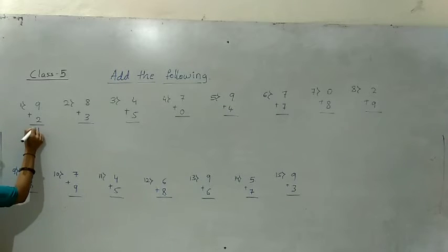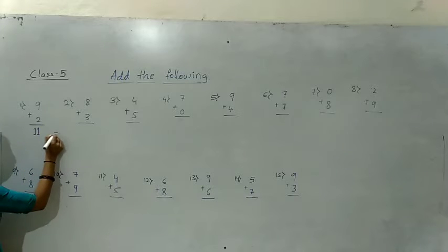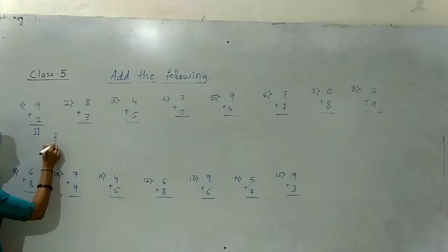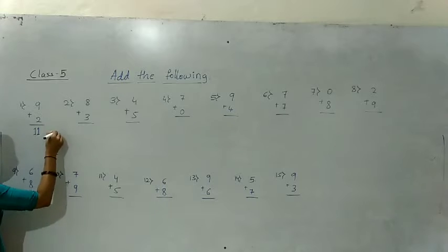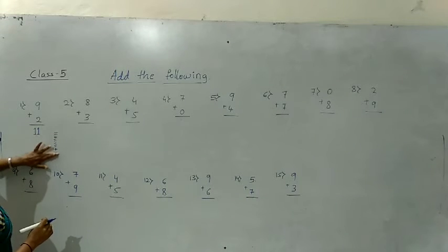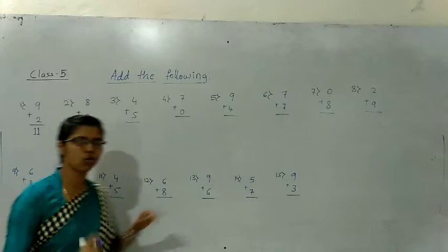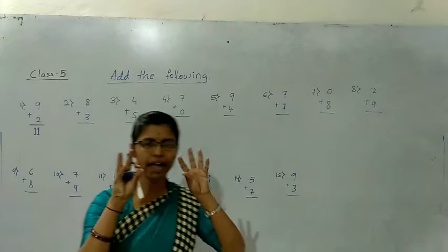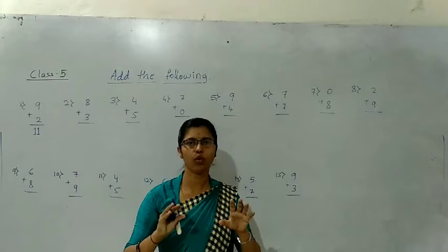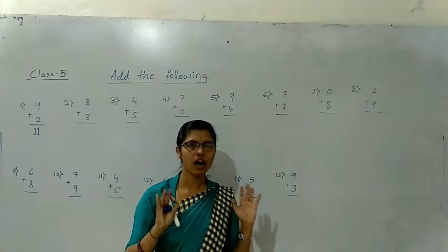So dear friends, listen here — don't count like this: one, two, three, four, five, six, seven, eight, nine, plus one, two. Don't do like this. With the help of fingers only you should write the answer.